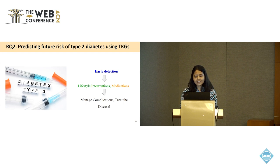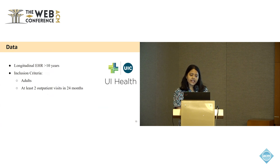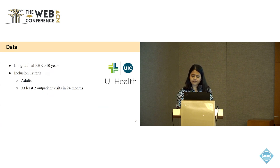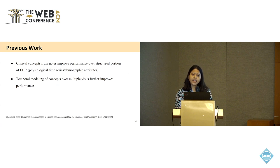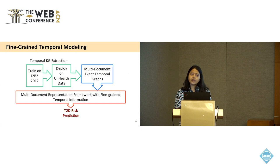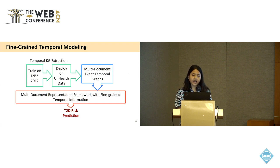Early detection of diabetes can lead to lifestyle interventions such as diet or exercise and medications, and can help manage complications and even treat the disease in some cases. We utilize longitudinal EHR data comprising 10 years of patient history from UI Health, the hospital at University of Illinois Chicago. Our previous work uses clinical concepts from nodes and finds this improves prediction over structured attributes alone. Modeling these concepts over multiple patient visits further improves prediction. In the next step, we want to leverage fine-grained temporal knowledge through the temporal graphs we extract, deploying the model trained on I2B2 corpus on UI Health data and aligning the multi-document temporal graphs for type 2 diabetes risk prediction.